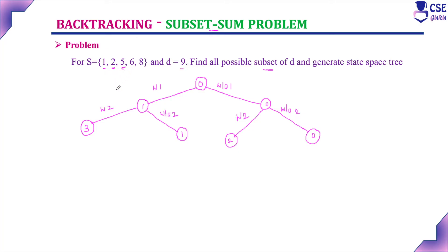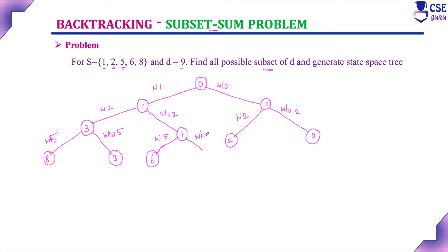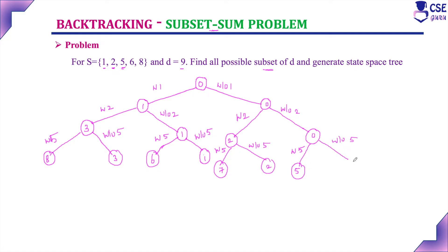Next, consider the third element 5. Adding 5 to 3 gives 8; without 5, the value is 3. Adding 5 to 1 gives 1 + 5 = 6; without 5, the value is 1. Adding 5 to 2 gives 7; without 5, the value is 2. Adding 5 to 0 gives 5; without 5, the value is 0.